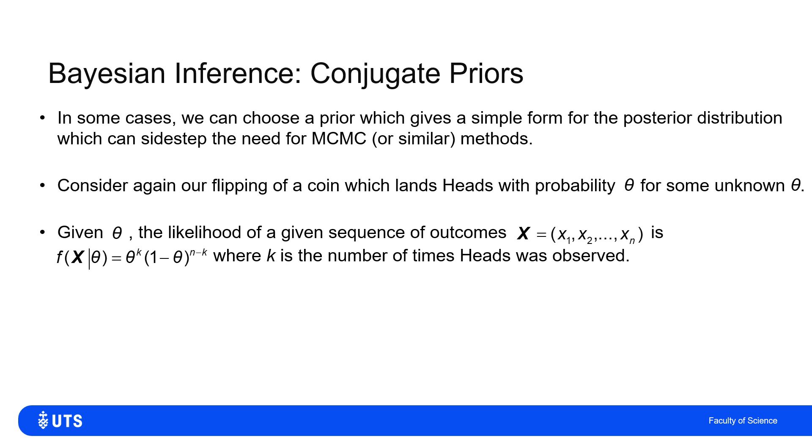So is there a distribution that I could choose for the prior which adequately describes my belief about what θ's value is before I start, which will play nicely with that and give me a nice posterior distribution to work with?